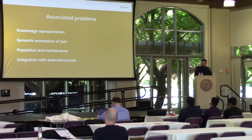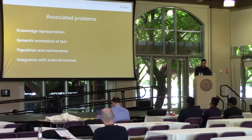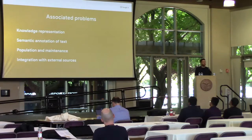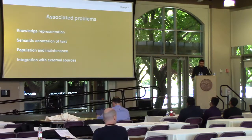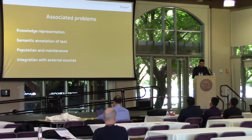We identified four main groups of associated problems: knowledge representation, semantic annotation of text, population and maintenance, and integration with external sources. In the next four slides, I will state some of the differences and the research questions guiding each direction.